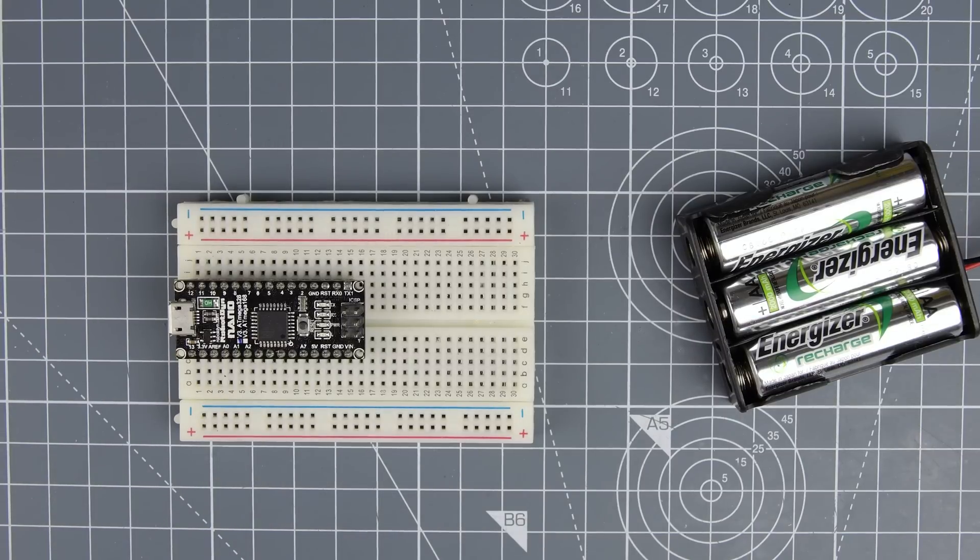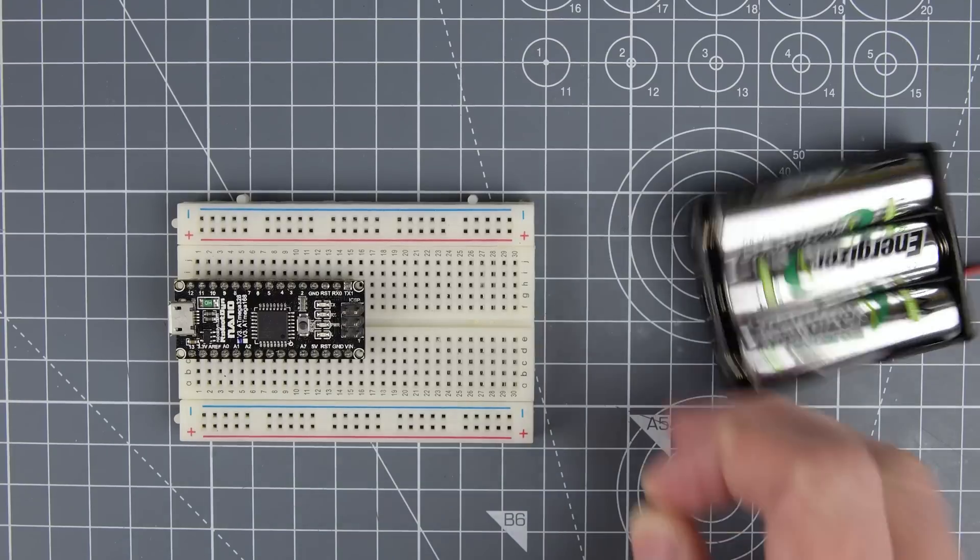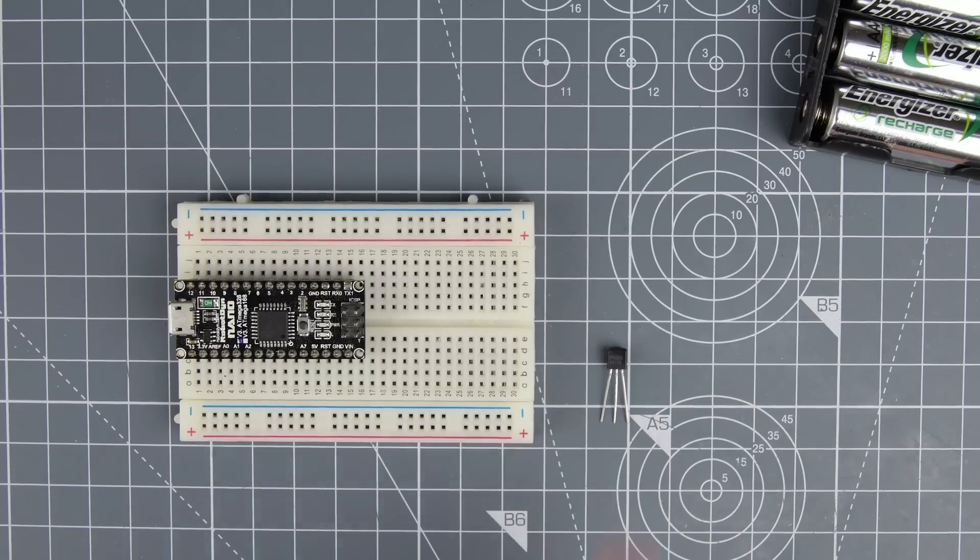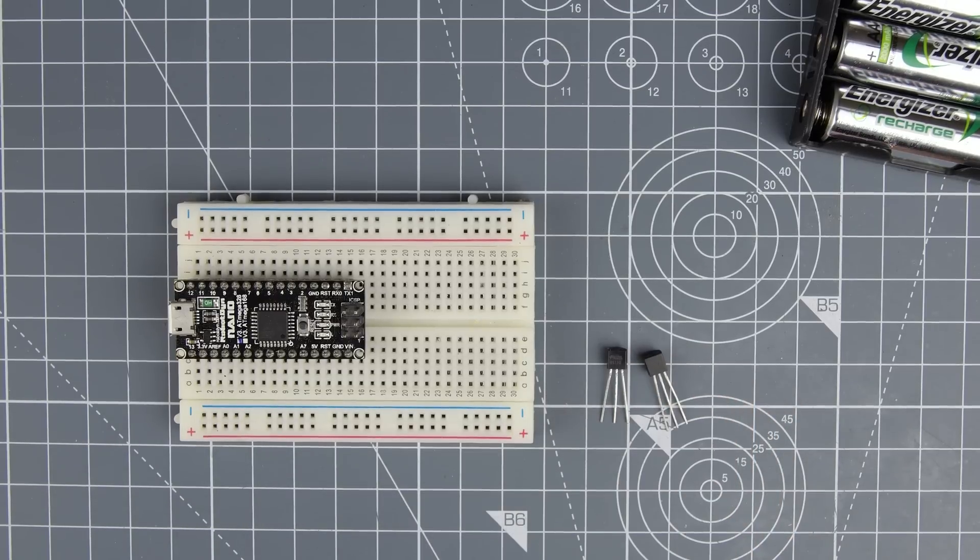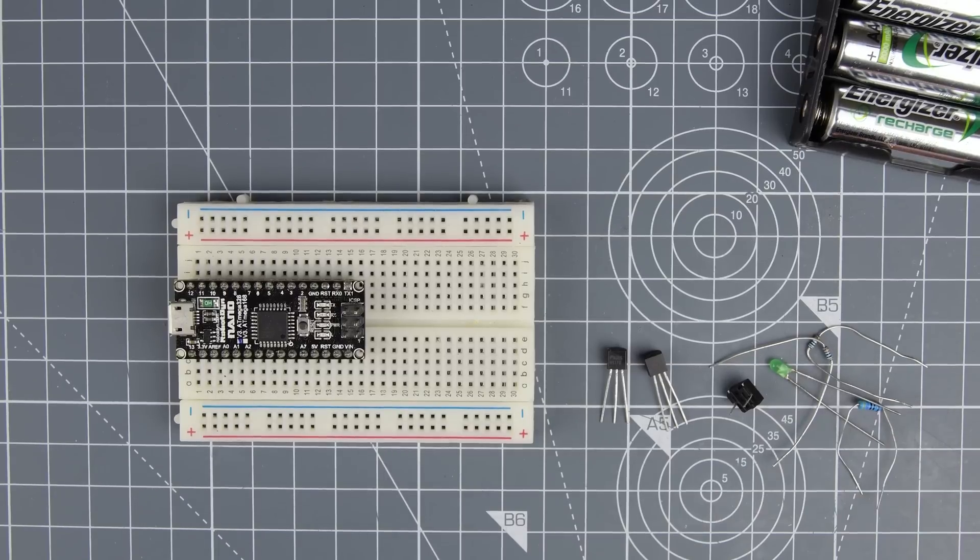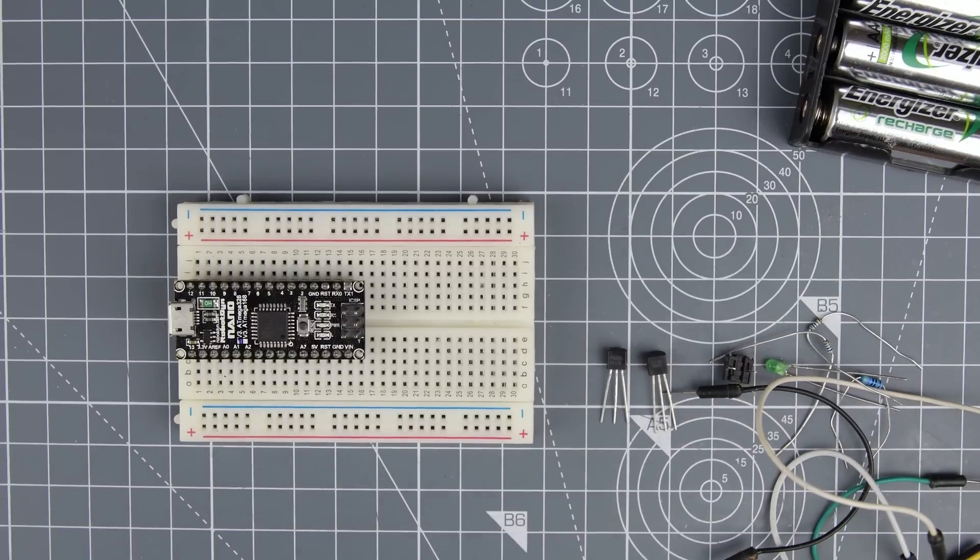So we're going to be using a couple of components and some sort of passive type stuff. The first thing we're going to be using is one of these. This is a BS170 and that's an N-channel MOSFET, an enhanced channel MOSFET and we're going to be using a 2N3906 which is a PNP transistor. We're going to use a button, a few other components, an LED just for indication, some resistors, and a bunch of wires.